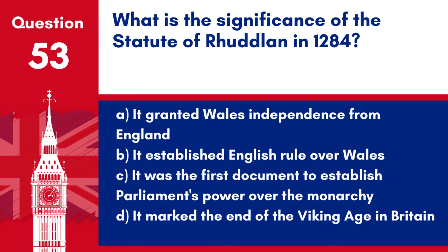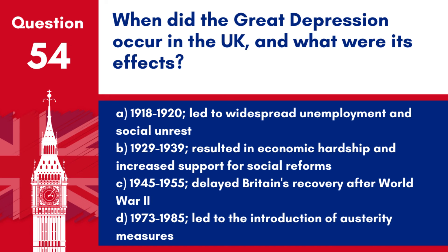Question 53. What is the significance of the Statute of Rhuddlan in 1284? a. It granted Wales independence from England. b. It established English rule over Wales. c. It was the first document to establish Parliament's power over the monarchy. d. It marked the end of the Viking Age in Britain. Answer: b. The Statute of Rhuddlan in 1284 was significant for integrating the legal administration of Wales into the English crown, following Edward I's conquest of Wales.